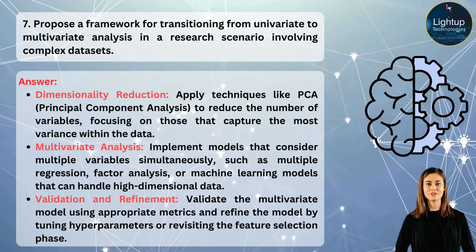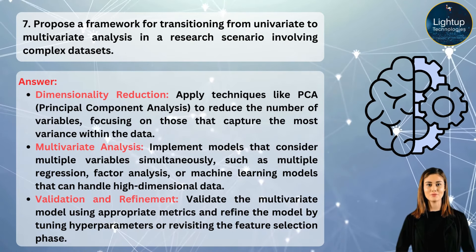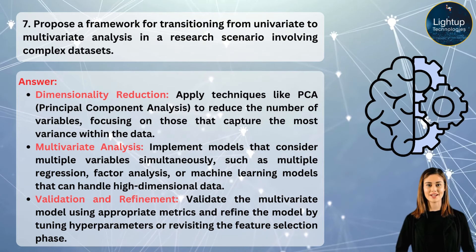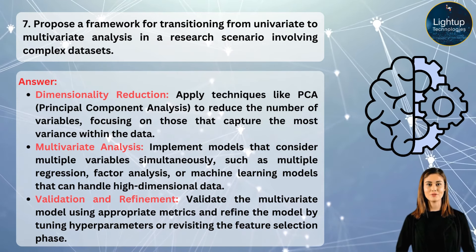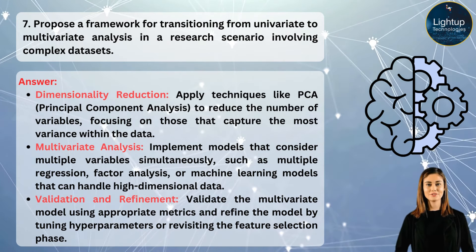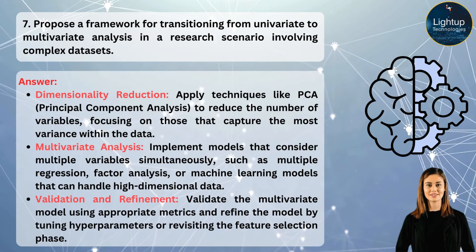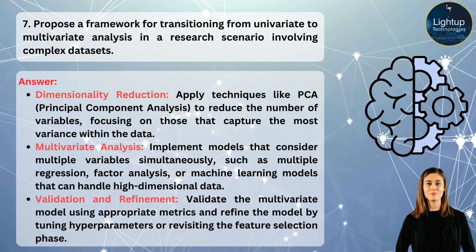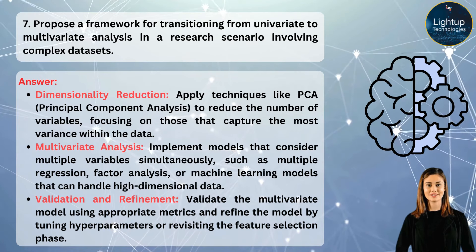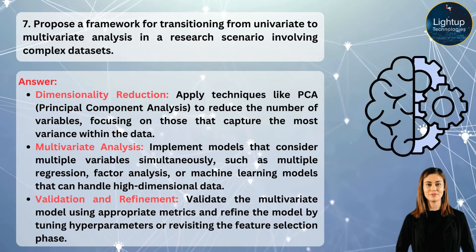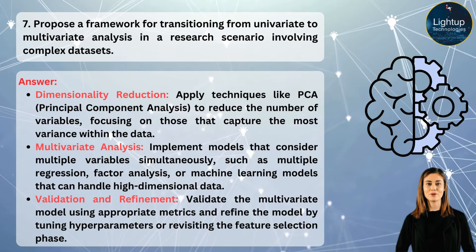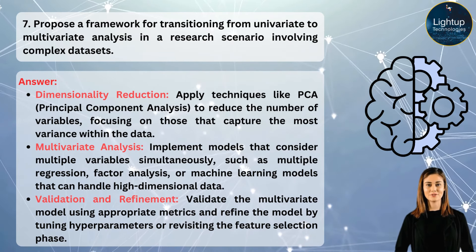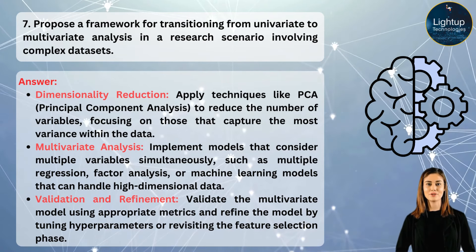Step 4: Dimensionality reduction — apply techniques like PCA (principal component analysis) to reduce the number of variables, focusing on those that capture the most variance within the data. Step 5: Multivariate analysis — implement models that consider multiple variables simultaneously, such as multiple regression, factor analysis, or machine learning models that can handle high-dimensional data.